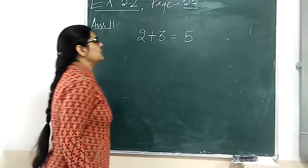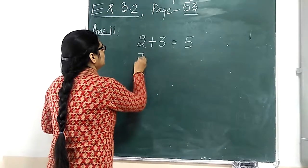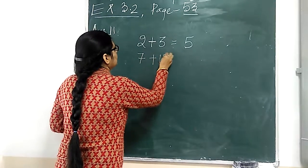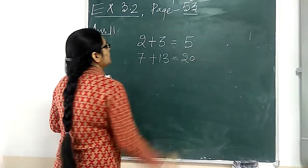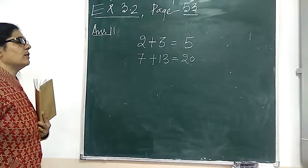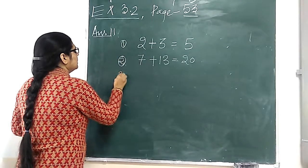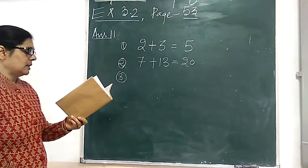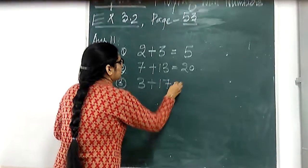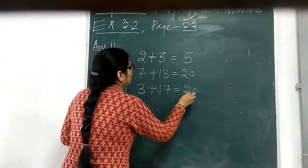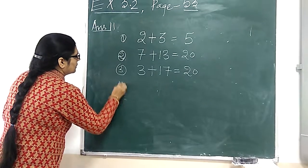5 is divisible by 5. Now, 7 plus 13, 20, 20 is divisible by 5. Now, third, first pair, second pair, third pair is 3 plus 17, then 20, 20 is divisible by 5.